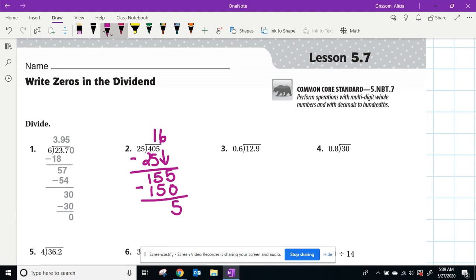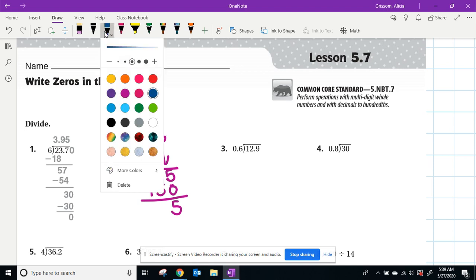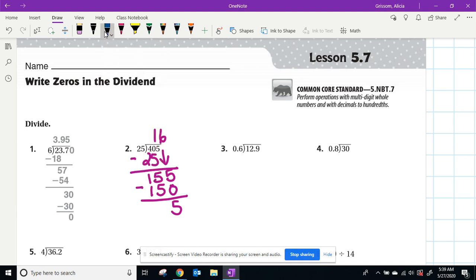Well, how do we do that? Well, I'm going to change the color so that it stands out a little bit. What we're going to do is add a decimal. And whenever we add a decimal in the dividend, we want to add a decimal in the quotient.